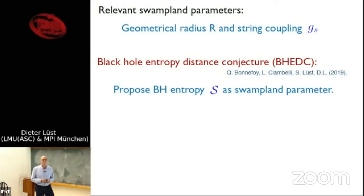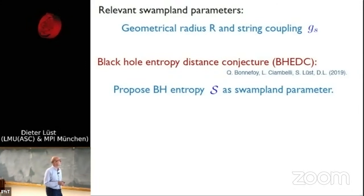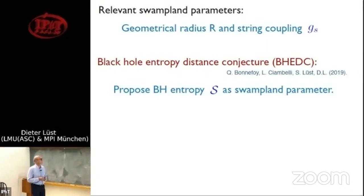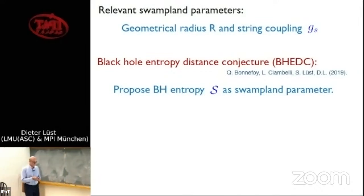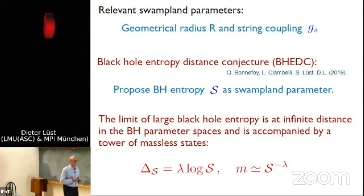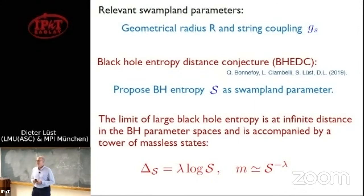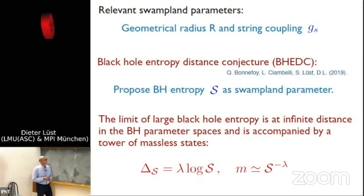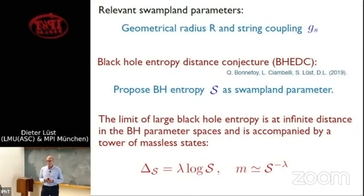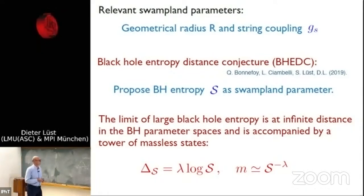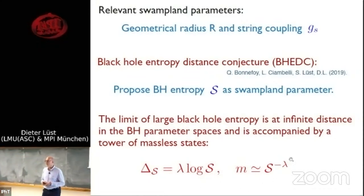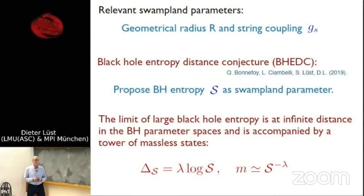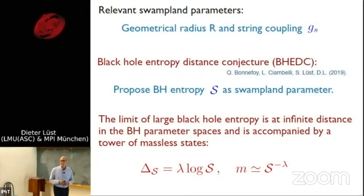Now let me come to the black hole distance conjecture, which we proposed together with collaborators. We proposed that the black hole entropy S should also serve as a swampland parameter. In the limit of large black hole entropy, the black hole should be at infinite distance in the black hole parameter space and accompanied by a tower of mass states. The distance functional is proportional to log S times some parameter, and the tower masses scale polynomially as S^{-λ}.